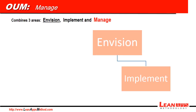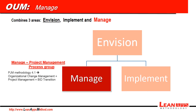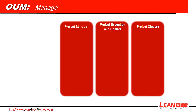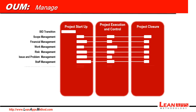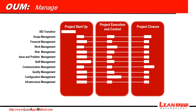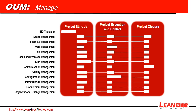The second area is called Manage, which is precisely like the PJM methodology version 4.1. It mixes organizational change management plus a project management methodology and a transition process. It has three different phases: project startup, project execution and control, and project closure. The processes include: Transition, which only happens during startup, and the following which happen throughout all three phases — Scope, Financial, Work, Risk, Issue and Problem, Staff, Communication, Quality, Configuration, Infrastructure, Procurement, and Organizational Change Management.